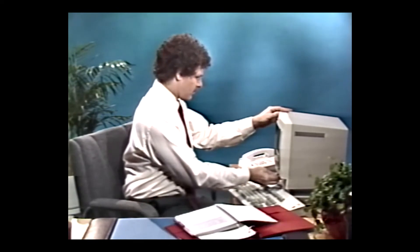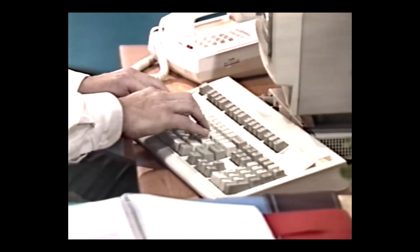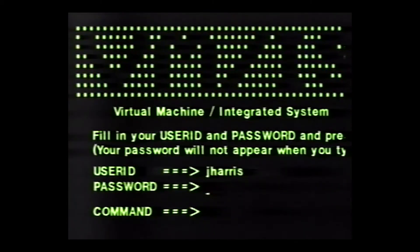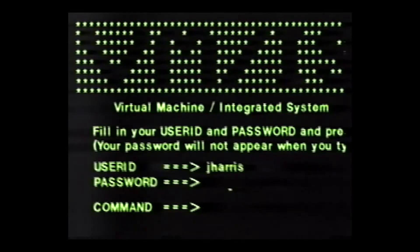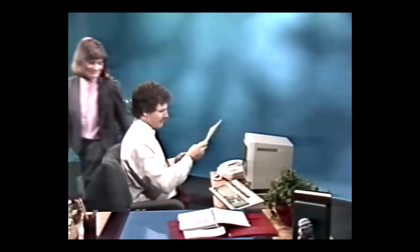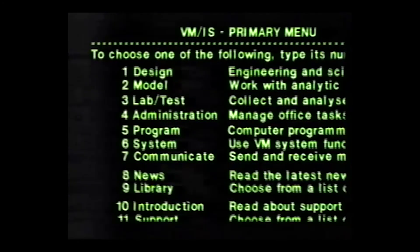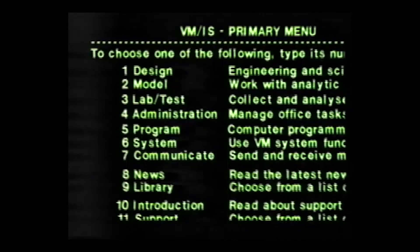He simply switches on his display station and waits for the VMIS logo to appear. Under the logo are the words 'user ID' and 'password', each followed by an arrow. Next to user ID, John types his user ID, then next to password, he types his password. Notice that the password didn't appear when it was typed — that's so someone passing by can't read it over John's shoulder. John now presses the Enter key. Moments later, the VMIS primary menu will appear and he is ready to begin.